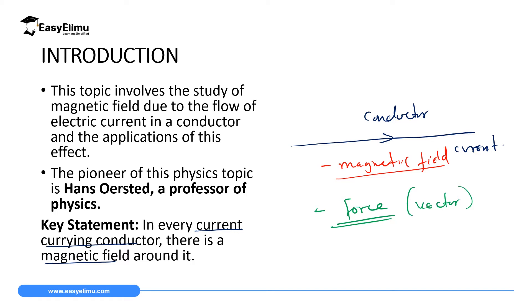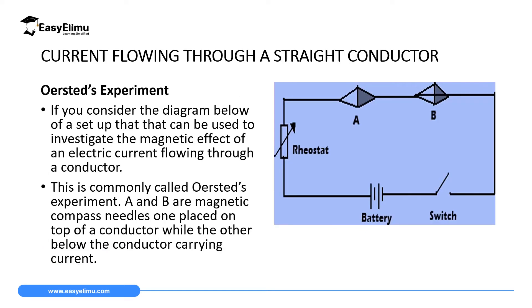And that's what we're going to discuss here — how to identify the direction of that magnetic field, then later how to identify the force which is being produced. And then we're going to see some of their applications. Since we have said that in every current-carrying conductor there's a magnetic field around it, our first goal will be identifying the direction of this magnetic field, and we have four ways in which we can identify this.